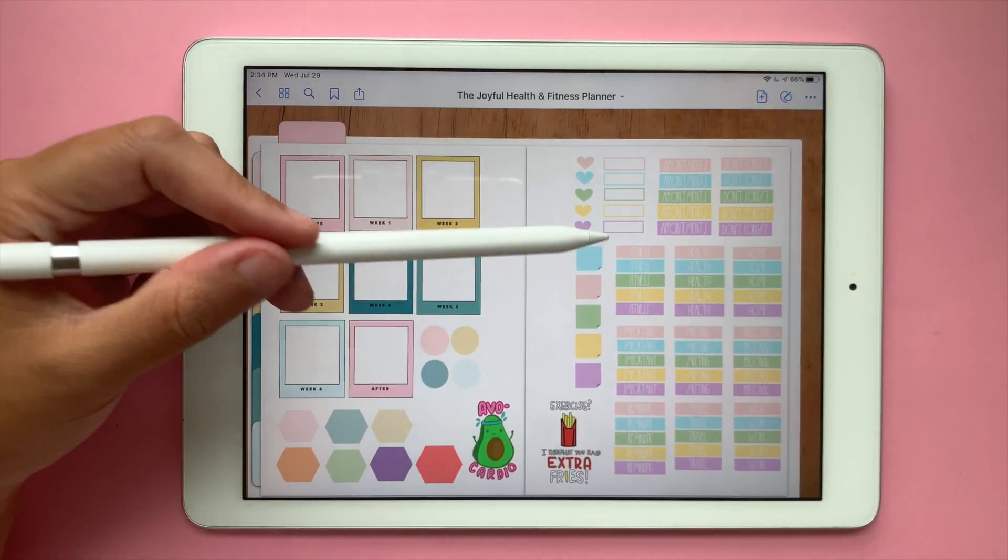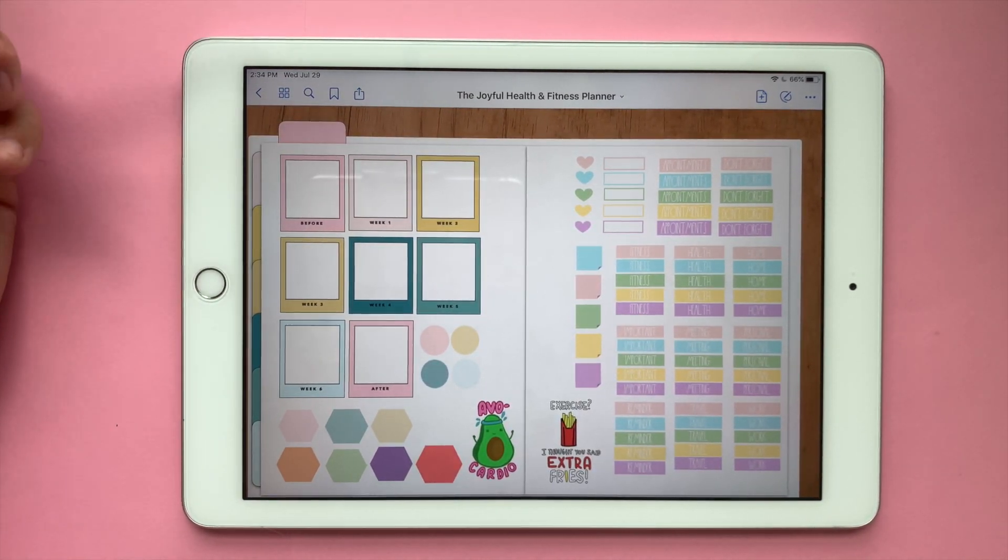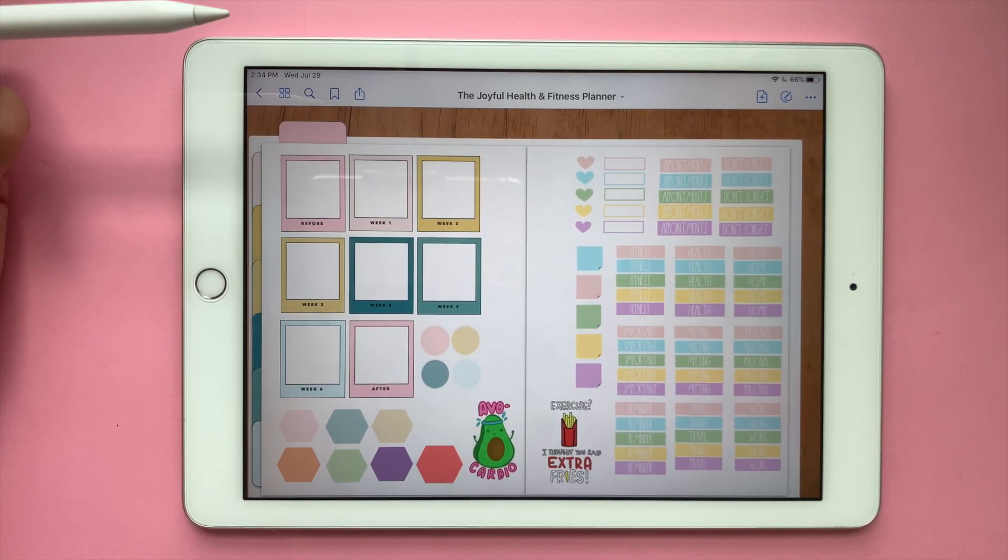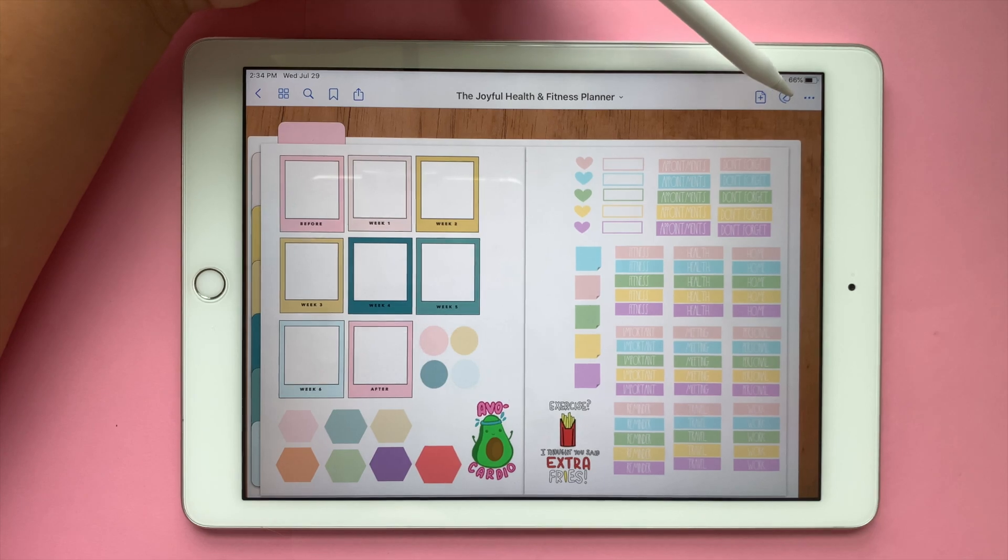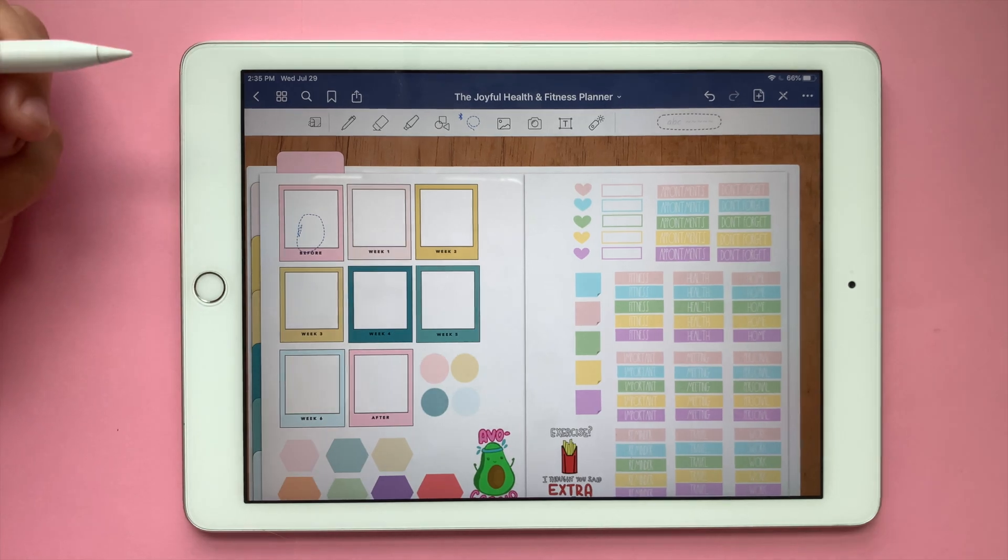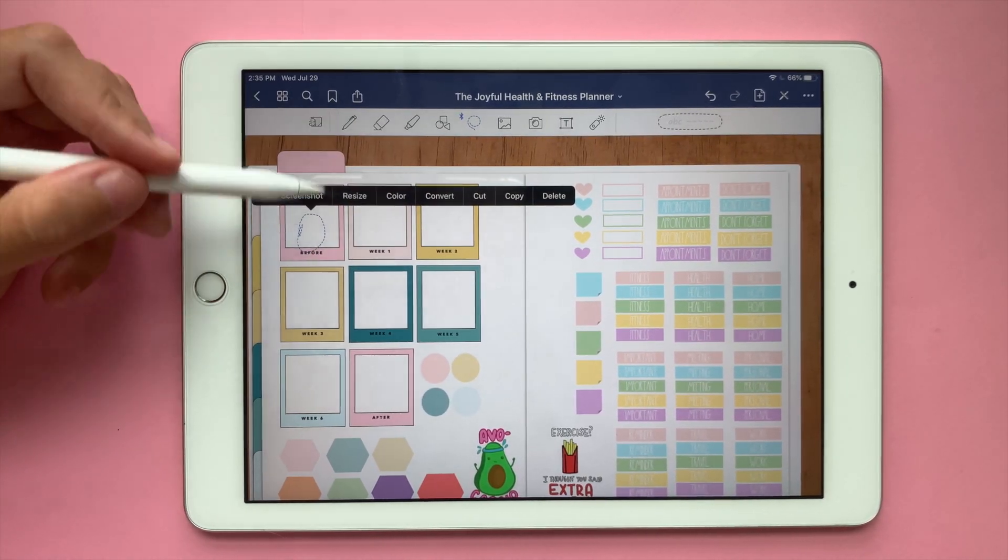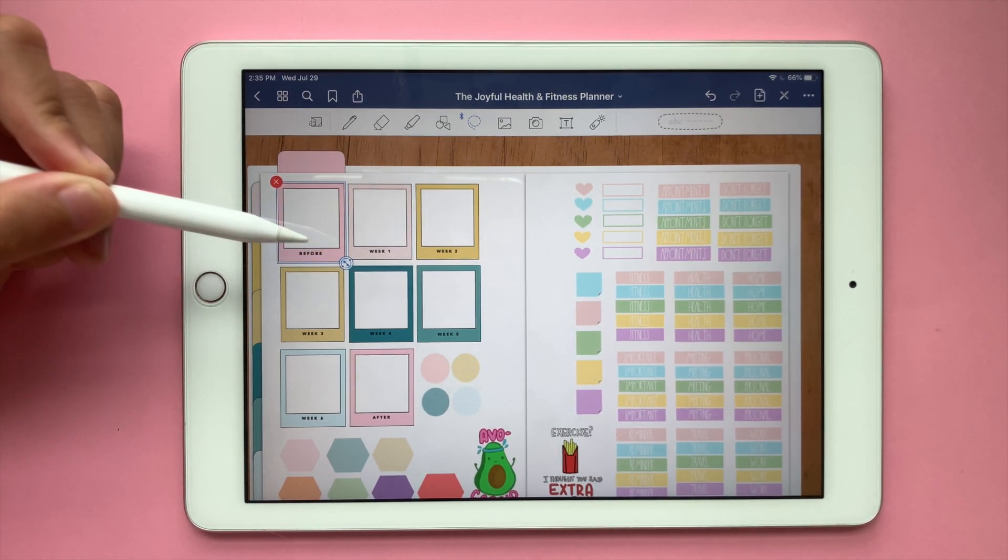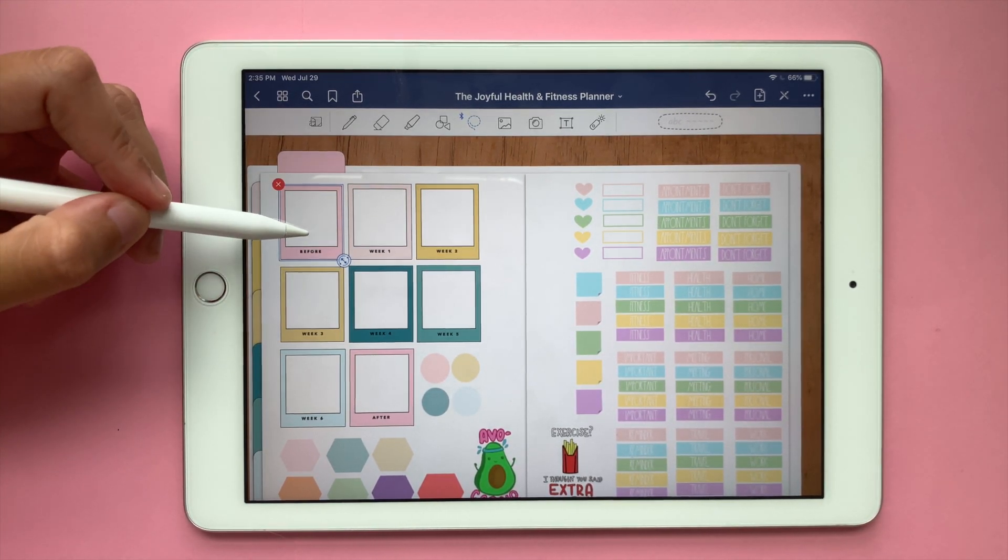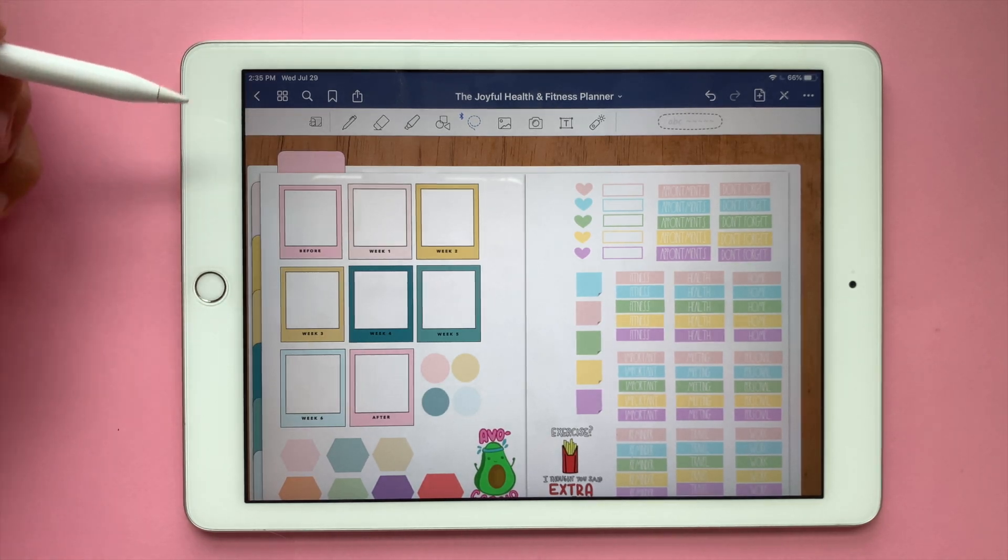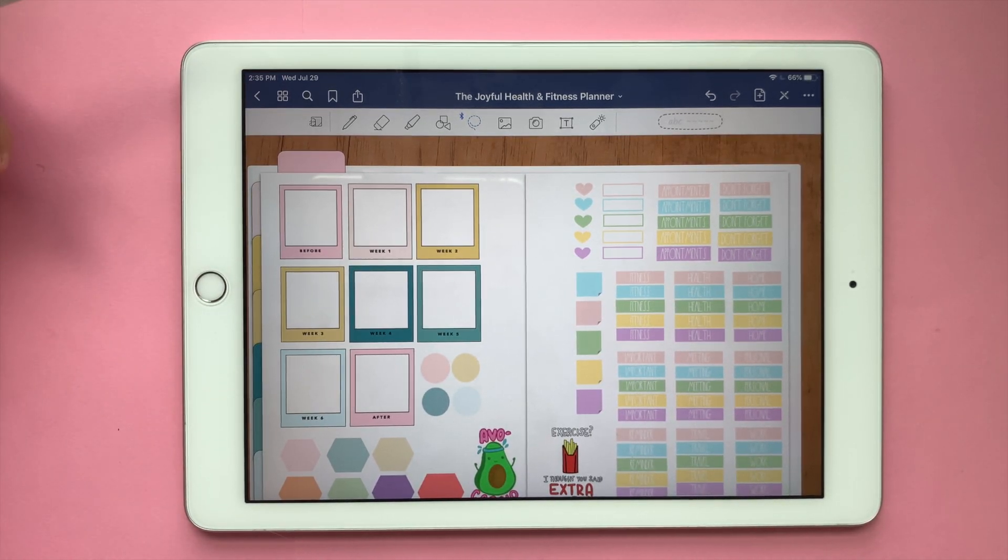You have these two sticker sheets that are pre-cropped for GoodNotes 5 only. So what that means is that you don't have to crop them because they're already pre-cropped. So you'll grab the lasso tool and you will make a little circle around it and keep it pressed and you can move it around. You can resize them. I have a specific video teaching you how to move them around and all that. So you can go to that video after watching this one.